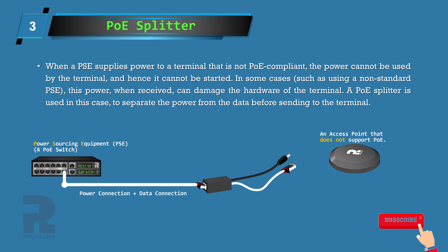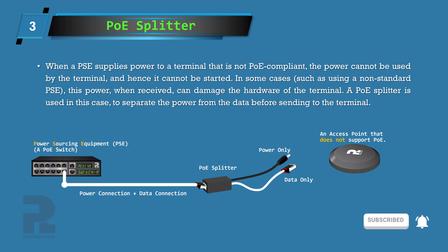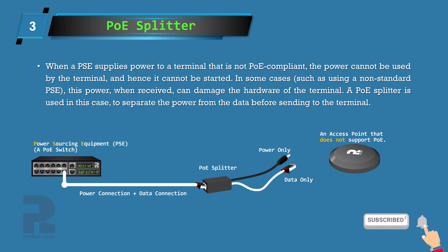Hence, a device called a PoE splitter is introduced on the network to split the power and data on this PoE connection, ensuring that terminals that are not PoE compliant can still receive the needed power to operate. The power and data connections are now isolated. This scenario can be seen as a special case of end-span PSE, where the terminal is considered to lack the built-in ability to split the power and data signals by itself.